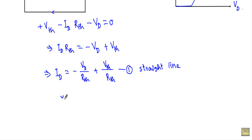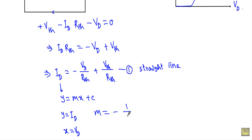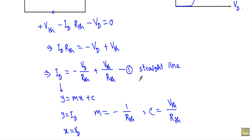If you are familiar with the formula of a straight line Y = MX + C, if I consider Y equal to ID and X equal to VD, you will see that the slope of the equation is M equal to minus 1 divided by RTH, and the y-intercept is C equal to VTH divided by RTH. So equation number 1 represents an equation of a straight line. To draw a straight line we need at least two points in the graph.